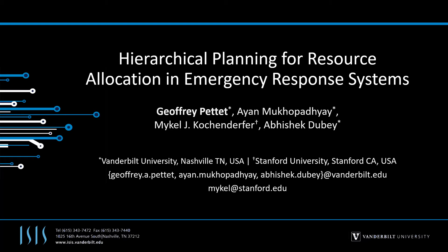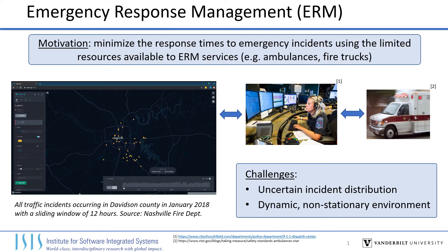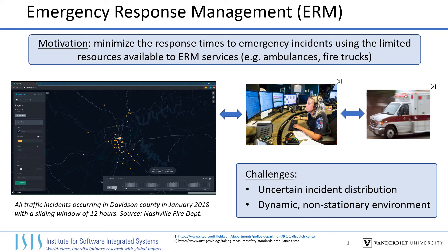This is Jeffrey Pettit, and today I'll be presenting my team's work on creating a hierarchical planner for resource allocation and emergency response systems. The goal in managing an emergency response system is to minimize the response times to emergency incidents occurring in an urban area using the limited resources available to responders. This is challenging because of uncertainty in the spatial-temporal distribution of the incidents, and because urban environments are dynamic and non-stationary, so decision algorithms need to adapt to the environment as it evolves.